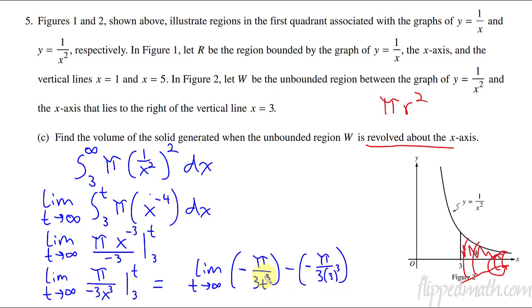Now I can have the limit as t approaches infinity. Anywhere where I have a t, which is right here, this thing approaches infinity. So that becomes a zero. Then I have minus a negative, so it's plus. Then I have pi over three times three times three to the fourth, basically, which is 81. So we could say the answer to this is pi over 81.